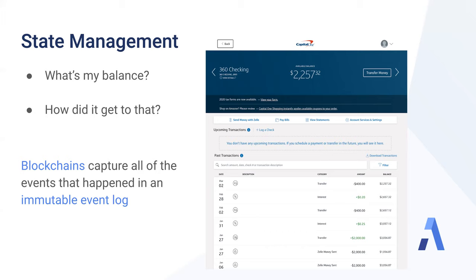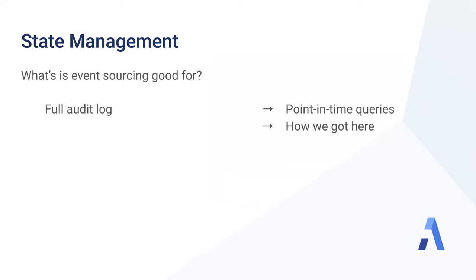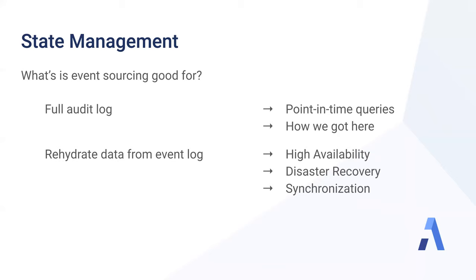Before we go into DAML specifically, let's talk a few minutes about the advantages of the event sourcing model. Many times we want to know not only our current state, but also what was the state at any past point in time. For example, I may want to query what my bank balance was as of February 10th, or what were all the transactions since February 10th.